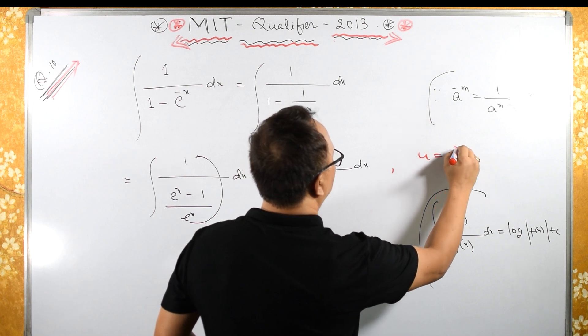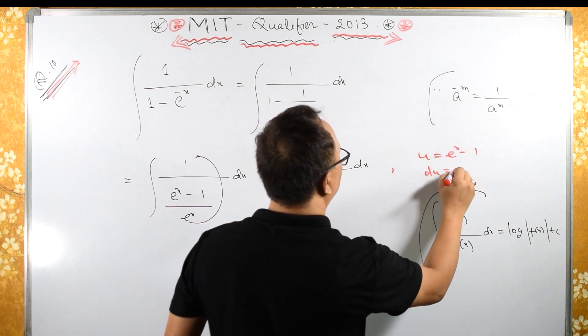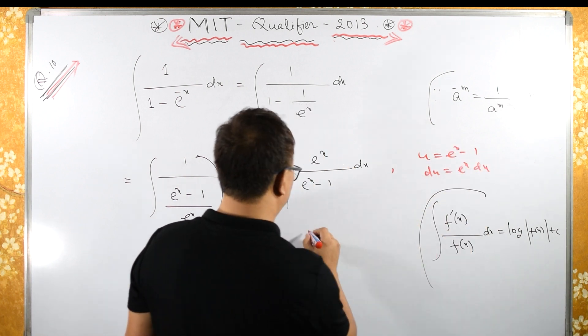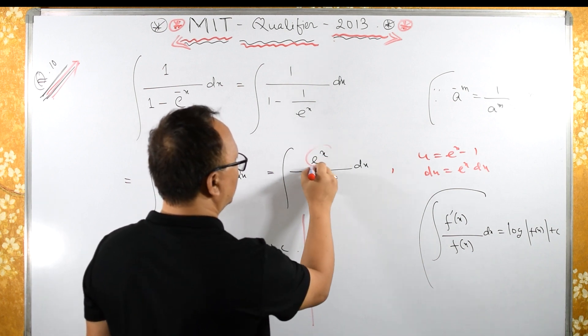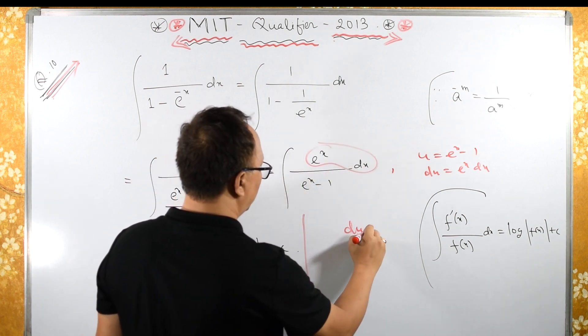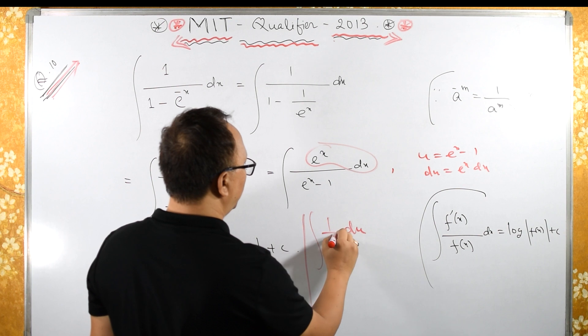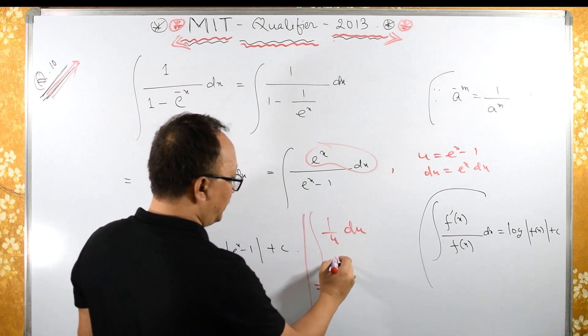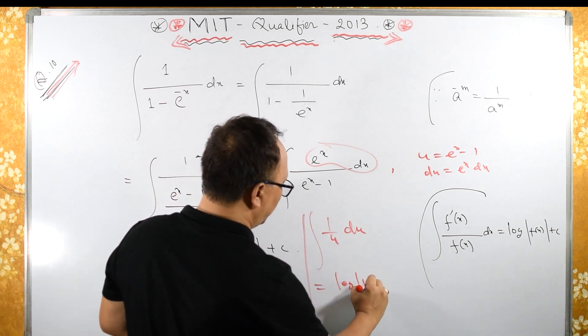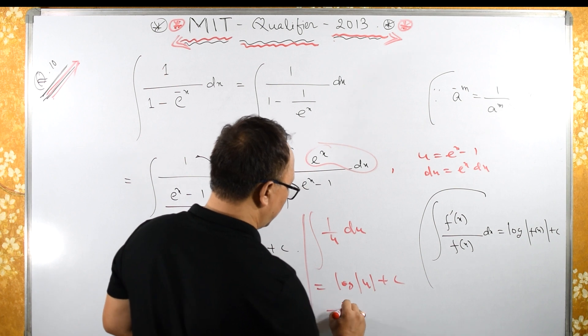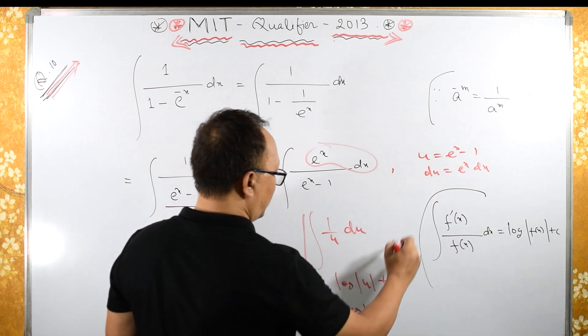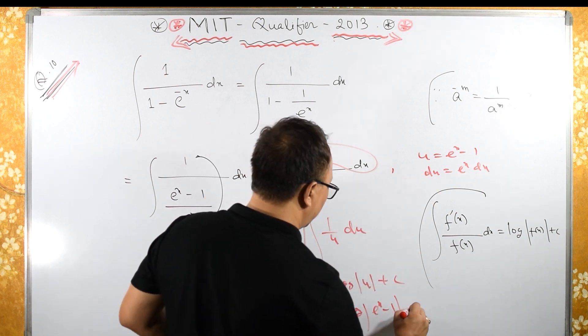You can substitute u equals to e raised to x minus 1, du equals to e raised to x dx. So this becomes du and this becomes 1 by u. 1 by u du is what? Log of u plus c. Log of what is u? U is e raised to x minus 1 plus c.